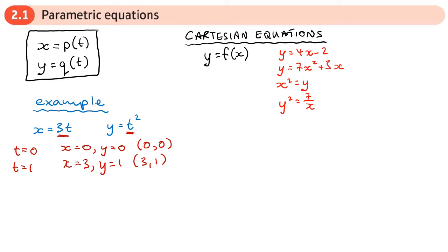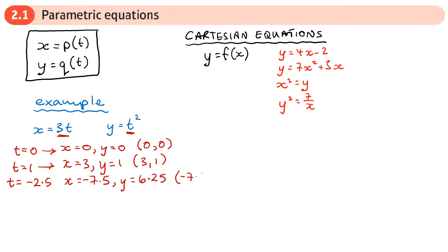T can be positive, it can be negative, it doesn't have to be whole numbers. So for example, I might decide that t is minus 2.5. The x coordinate, when t is minus 2.5: if I do 3 times negative 2.5, I'd get negative 7.5 for the x coordinate. And for the y coordinate, I would do negative 2.5 squared, and that would give me 6.25, because if you square a negative it becomes positive. So this coordinate would be (−7.5, 6.25).